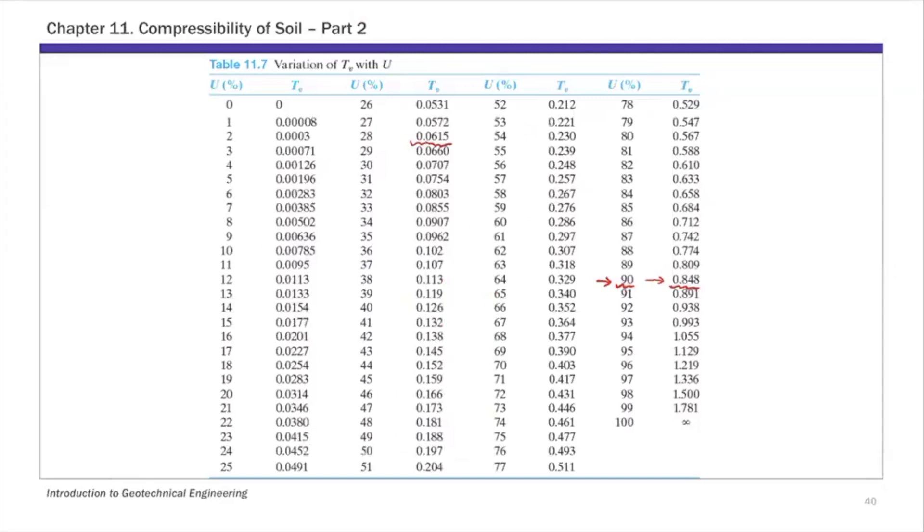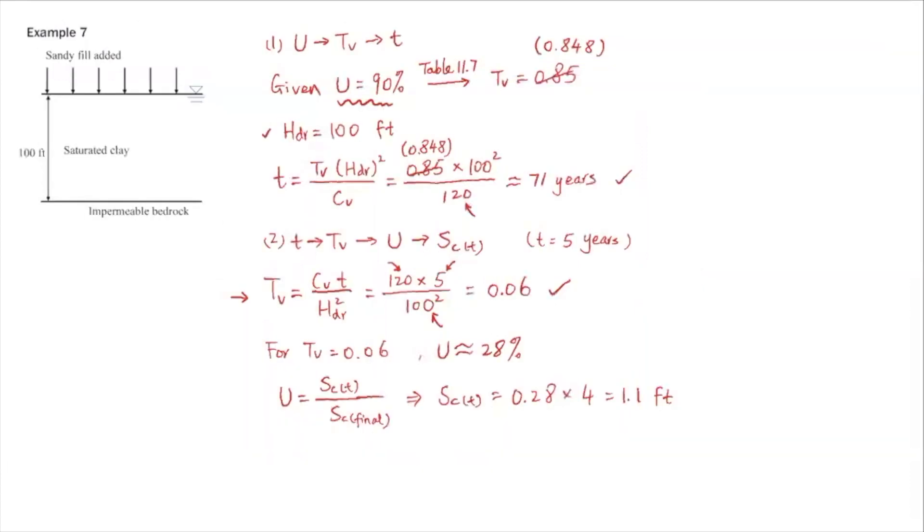It's in between these two values, and if you do interpolation, it's actually pretty close to about 28 percent. If you want to be really accurate, you can do linear interpolation between these two values, but it's going to be very close to 28 percent.